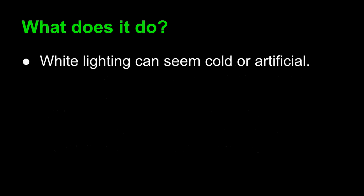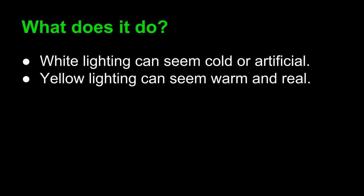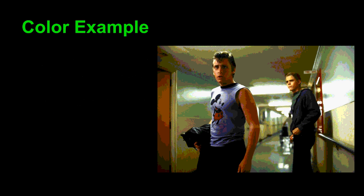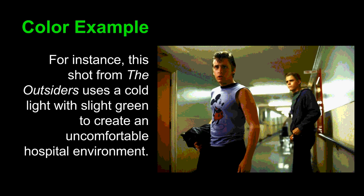We could also think about lighting. White lighting can seem cold or artificial, whereas yellow lighting can seem warm and real. Just identify the type of color, either in lighting or in objects, and think of what it might do in the story. Here's an example from The Outsiders. In this shot, you can see that the director uses a cold light — see that bank of fluorescent lights overhead — with a slight green tone to create an uncomfortable hospital environment. The cold white light and the sickly green tone of the setting creates an uncomfortable feeling for the characters.